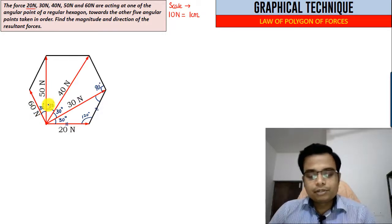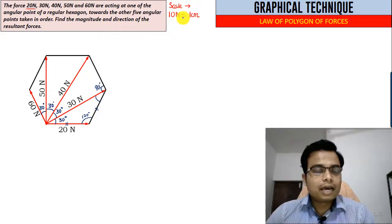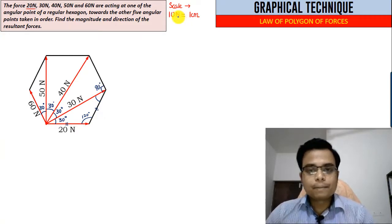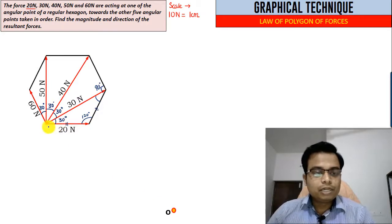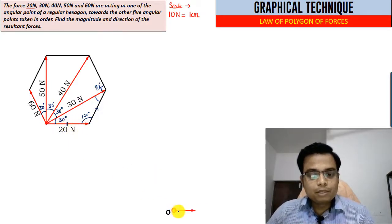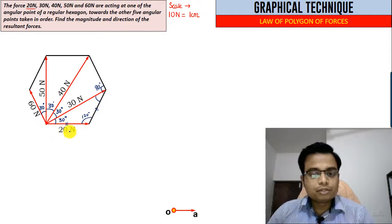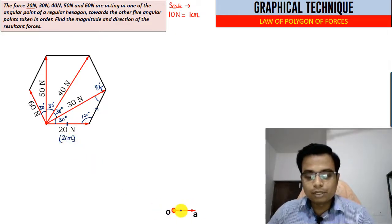Now what we're going to do is quickly take this scale into account and make a force diagram. Let's start with this point over here. Initially we have to draw a line absolutely parallel to this 20 Newton force. Corresponding to 20 Newton, the length will be 2 centimeters.